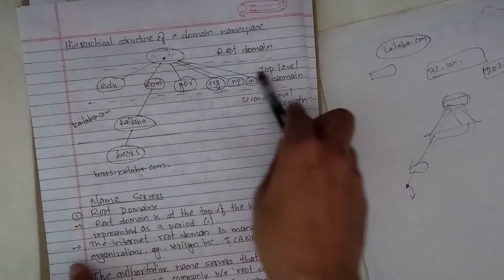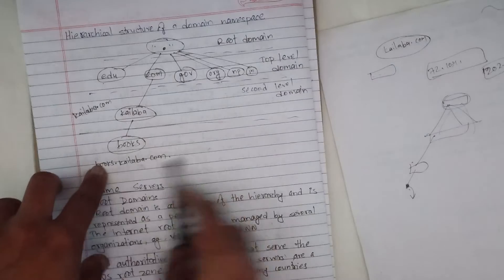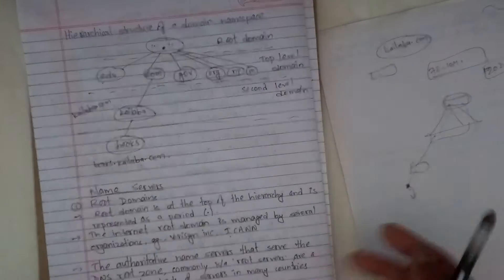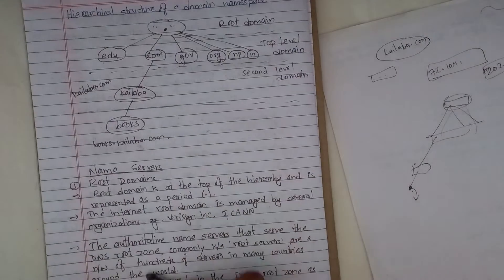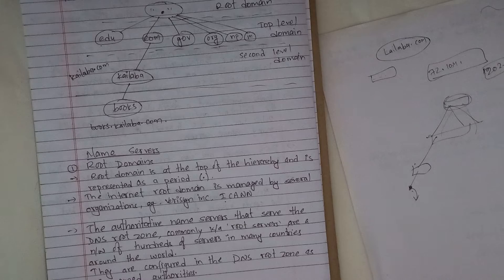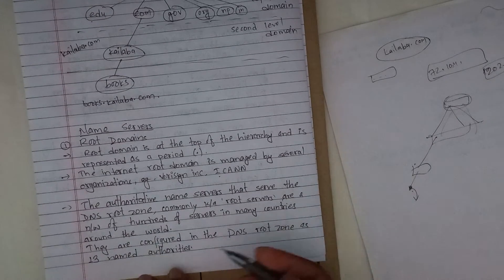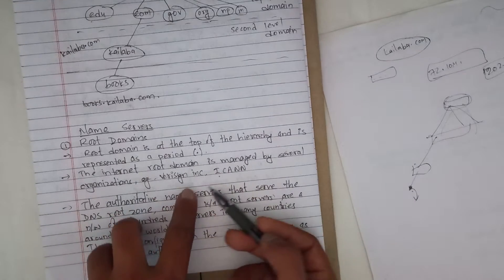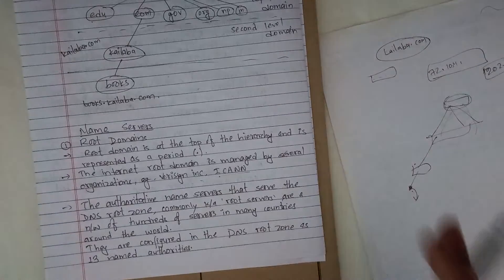The second-level domain sits below the top-level domain, and there are also subdomains like books and others. The root domain is managed by several organizations. There are 13 root domain servers managed by various organizations.